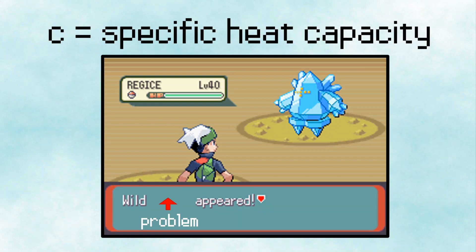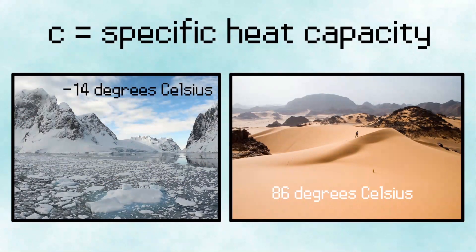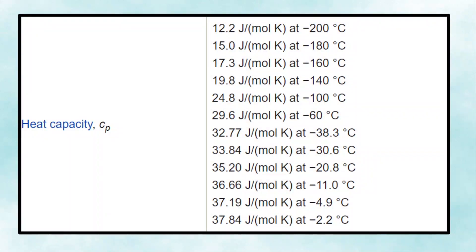Now C, or the specific heat capacity, is where we encounter a problem. 200 degrees Celsius is a huge range of temperatures. The pictures shown here are at places only 100 degrees Celsius apart. And because of this, the specific heat capacity of ice changes quite a bit from negative 200 degrees Celsius to 0 degrees Celsius.